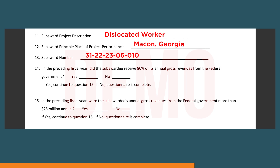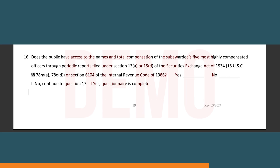Fifteen, in the preceding fiscal year, were the subawardee's annual gross revenues from the federal government more than $25 million annually? Yes or no? If yes, continue to question sixteen. If no, the questionnaire is complete. Sixteen, does the public have access to the names and total compensation of the subawardee's five most highly compensated officers through periodic reports filed under Section 13A or 15D of the Securities Exchange Act of 1934, or Section 6104 of the Internal Revenue Code of 1986?